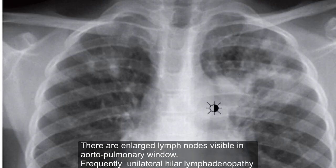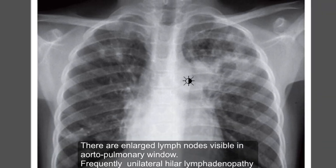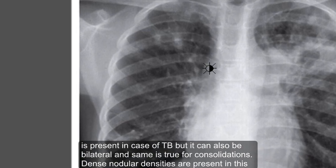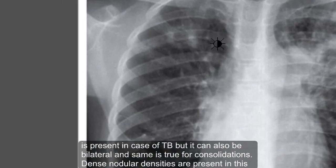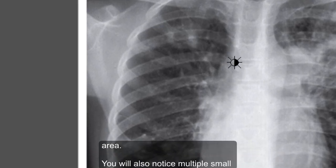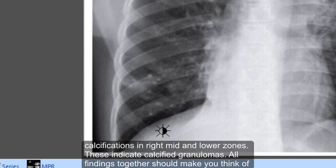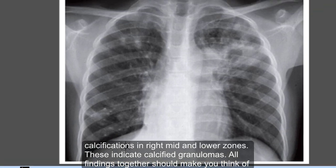There are enlarged lymph nodes visible in the aortopulmonary window. Frequently, unilateral hilar lymphadenopathy is present in TB, but it can also be bilateral — and the same is true for consolidations. Dense nodular densities are present in this area, and you'll also notice multiple small calcifications in the right mid and lower zones, indicating calcified granulomas.